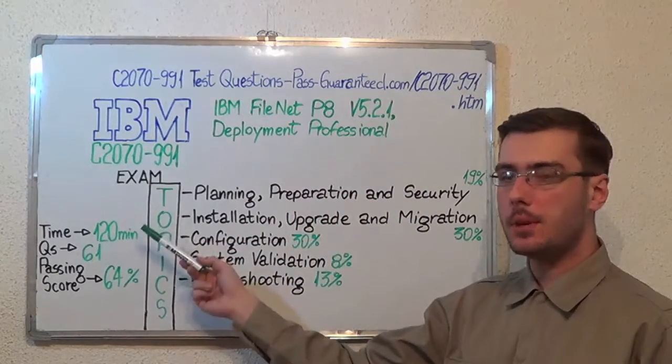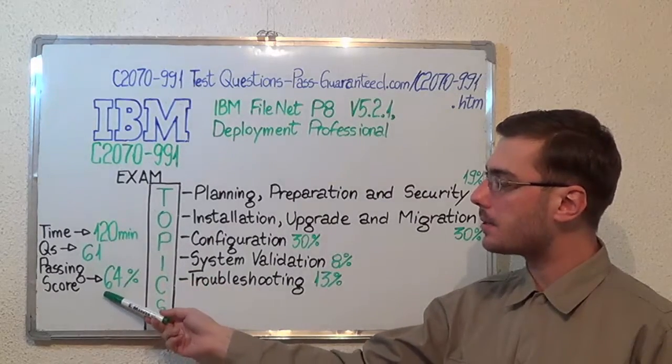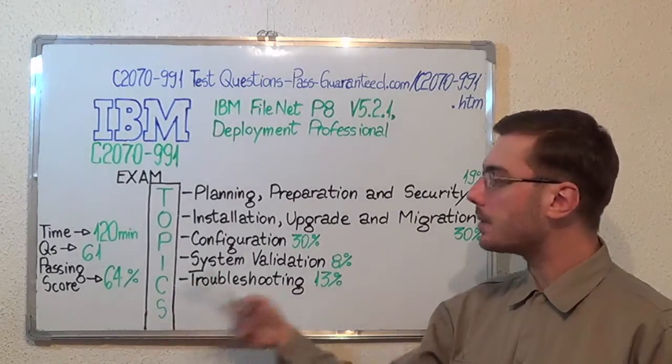Here we have some basic test information. The duration of this exam is 2 hours, there are 61 questions, and the minimum passing score is 64%. Now let's move on to the exam topics.